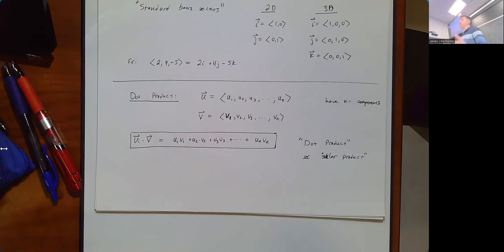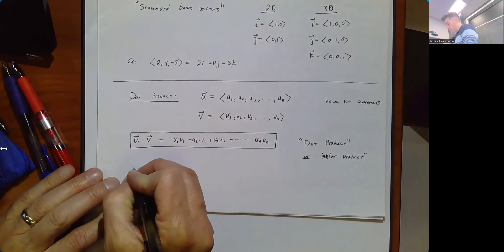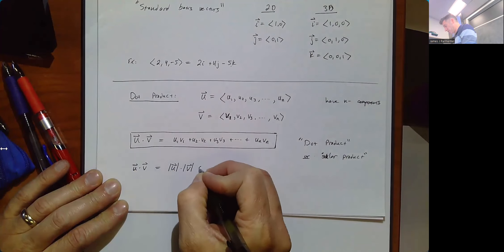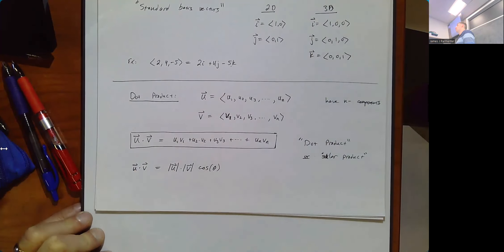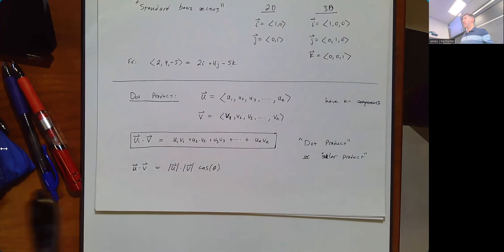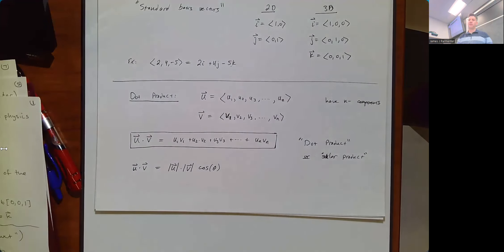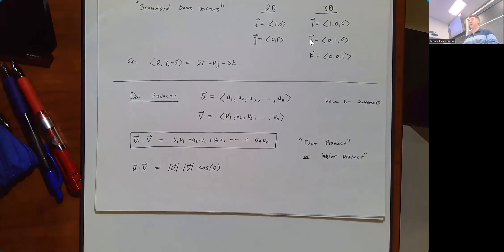Alternatively, u dot v can also be written as the magnitude of u times the magnitude of v times cosine of the angle between the two vectors. Although we almost never use this formula to find the dot product, it gives you the ability to calculate the angle between two vectors even in higher dimensions — like five-dimensional space.